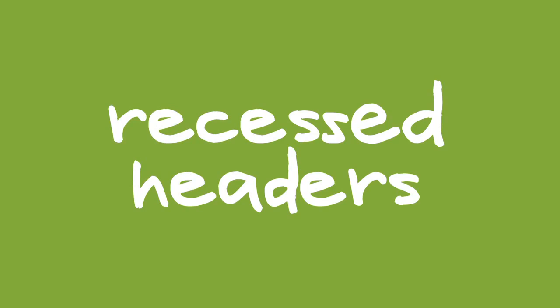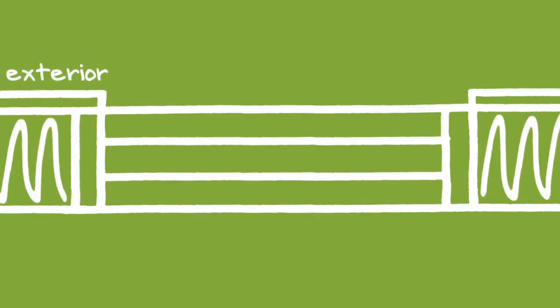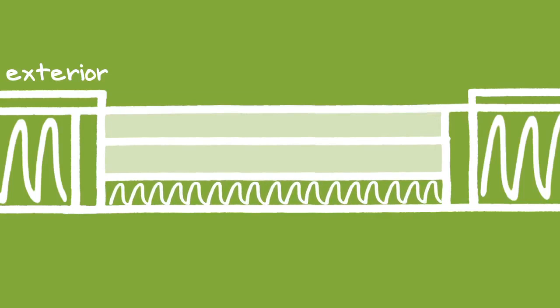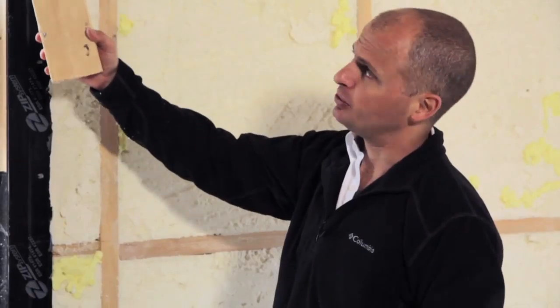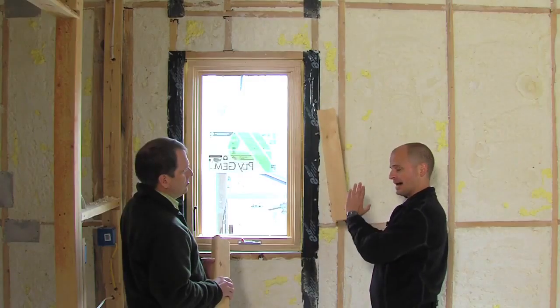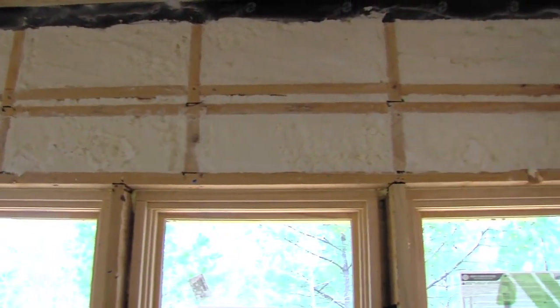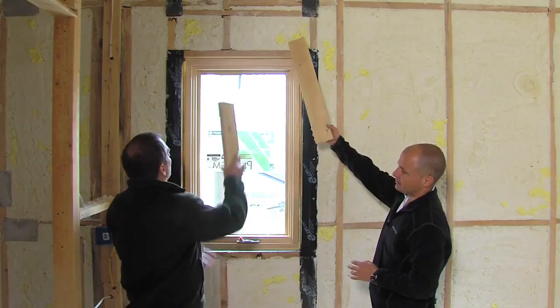Recessed headers. For a six-inch wall assembly, the typical header stacks three two-by-sixes. The advanced framing method removes one two-by-six and pushes the header to the outside, allowing for an inch and a half of foam insulation inside the header. We were able to push the headers back to the outside and allow for an inch and a half of insulation to be placed in front of the header, again reducing that thermal bridging.